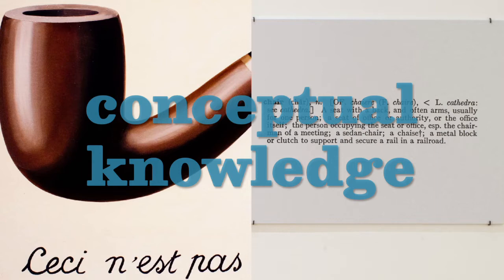A picture of a pipe is not a pipe, but a visual depiction of it. A definition of a chair specifies its build and purpose, but you can't sit on a definition. And that's what conceptual knowledge is — it helps us identify things, whether we're in 3D space, in pictures or media, in our imaginations or in our conversations. These are representations of the real world which are organized in our heads so we can make sense of a world filled with far too many objects to count.